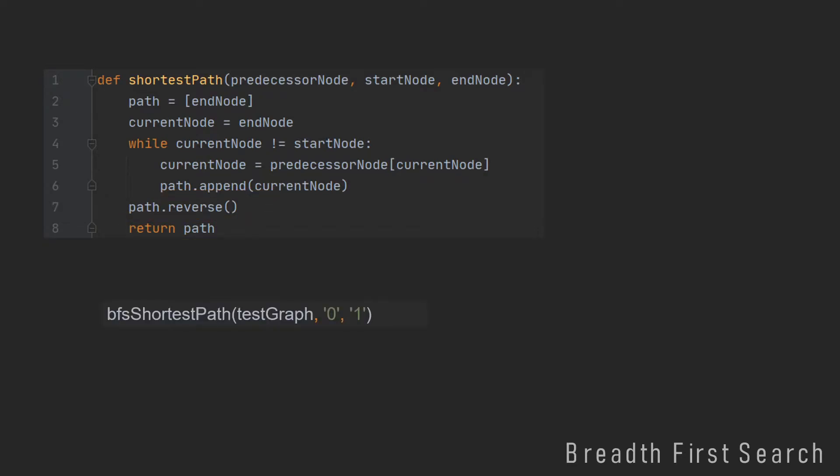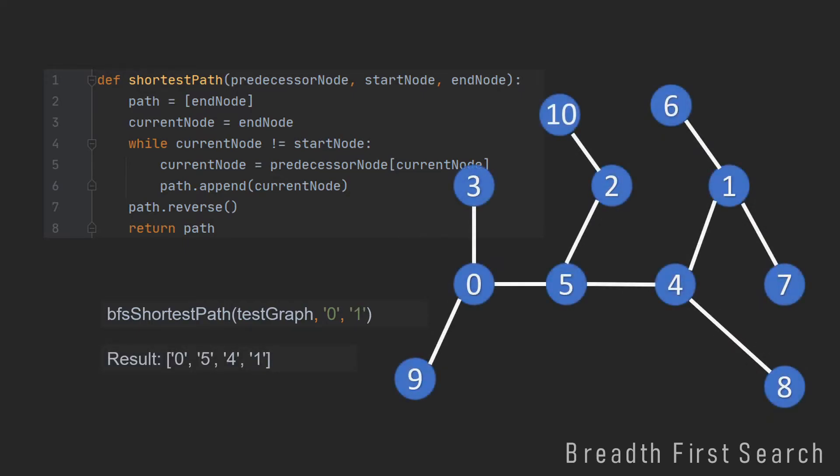Now when we call the function, for example, on our test graph, and we want to get the shortest path from 0 to 1, the result will be 0, 5, 4, 1. And we can actually confirm this by looking at our graph. And as you can see, 0, 5, 4, 1 is the only path from 0 to 1, and so it's the shortest path.